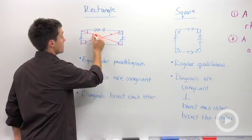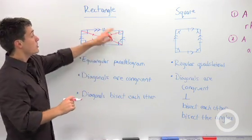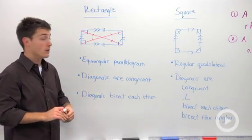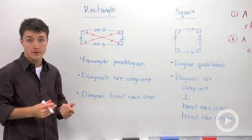So these segments are going to be congruent. Now I didn't use a different number of markings here since the diagonals are congruent—these four segments will be congruent to each other.